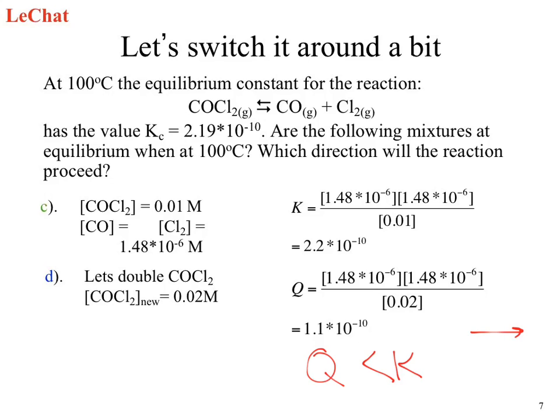We get the forward reaction. Our product concentration would increase. Our reactant concentration would decrease. So what did the reaction do to account for that change? We increased the concentration of our reactant. To reach equilibrium, it increased the product concentration by decreasing the reactant concentration. So what it did was shift to account for that difference.